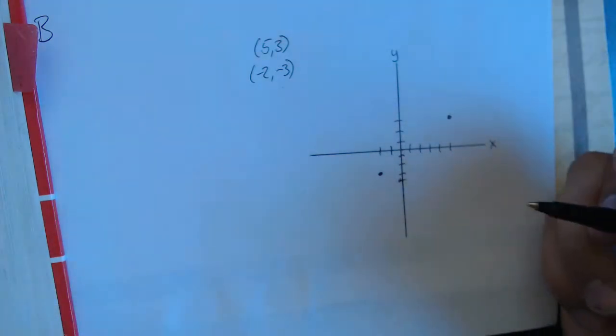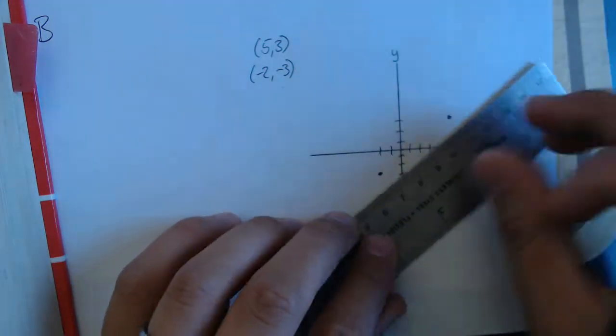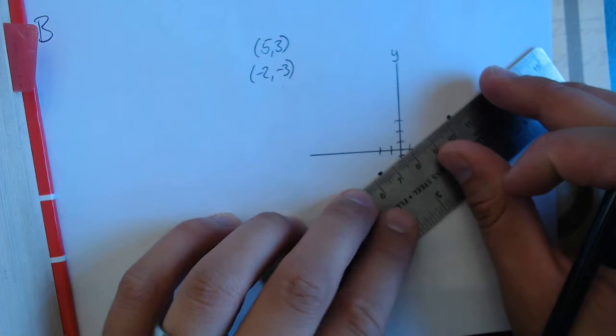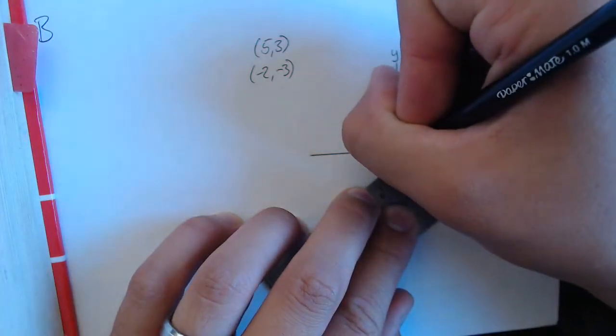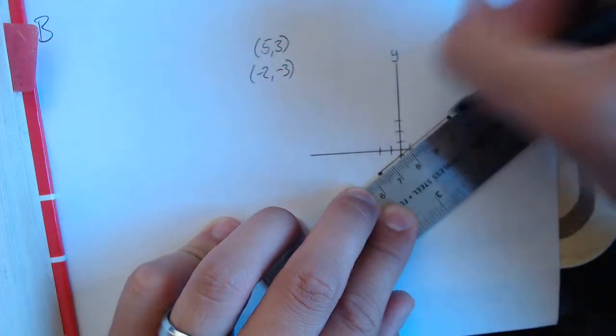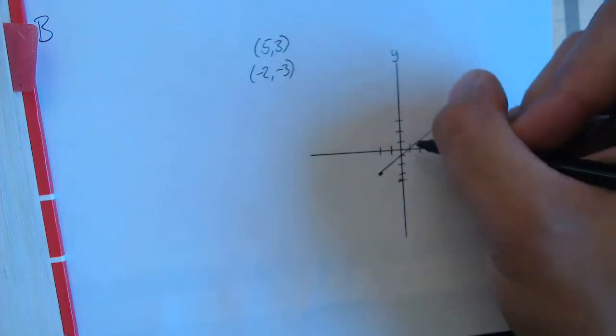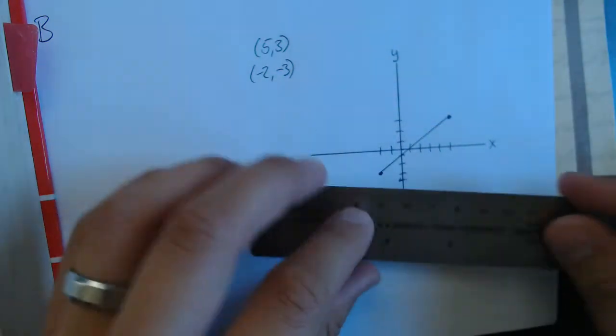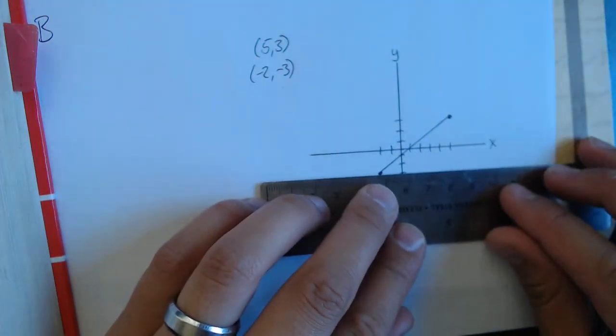And what we need to find is the distance, or this length, right here. So how can we find that length? Well, if we think of it as being a right triangle...